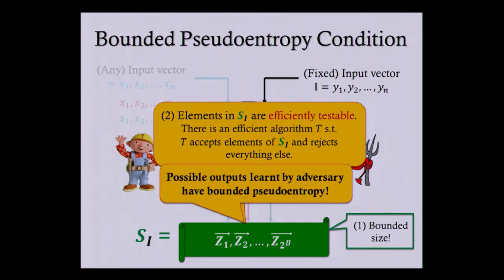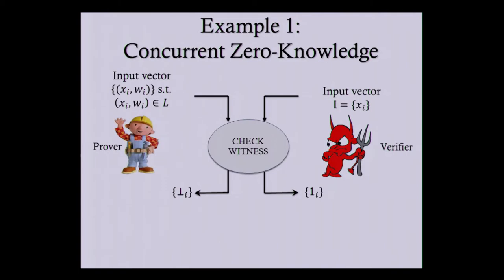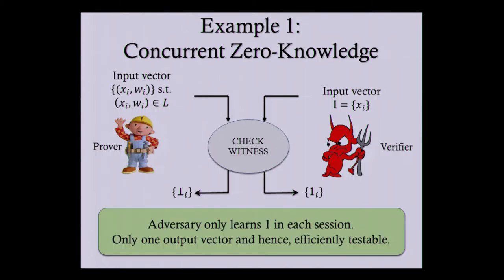Let me give a few examples which satisfy bounded pseudo-entropy. The simplest case is concurrent zero knowledge: the adversary is a verifier holding a list of NP statements, and the prover holds the statements along with witnesses. The ideal functionality checks the witnesses and tells the output to the adversary. Since the prover is honest, in each session the adversary just learns the bit one. So the adversary can learn a unique output vector — the all-ones vector — and this is also efficiently testable.